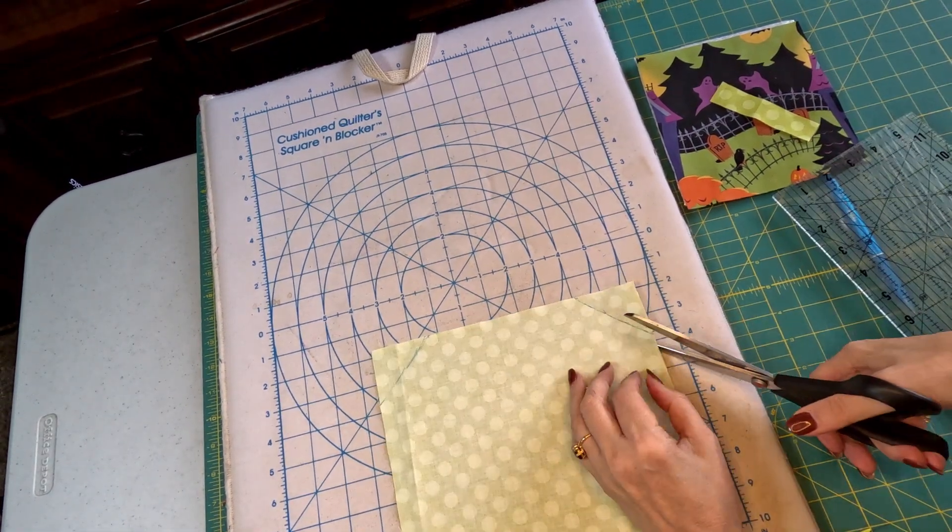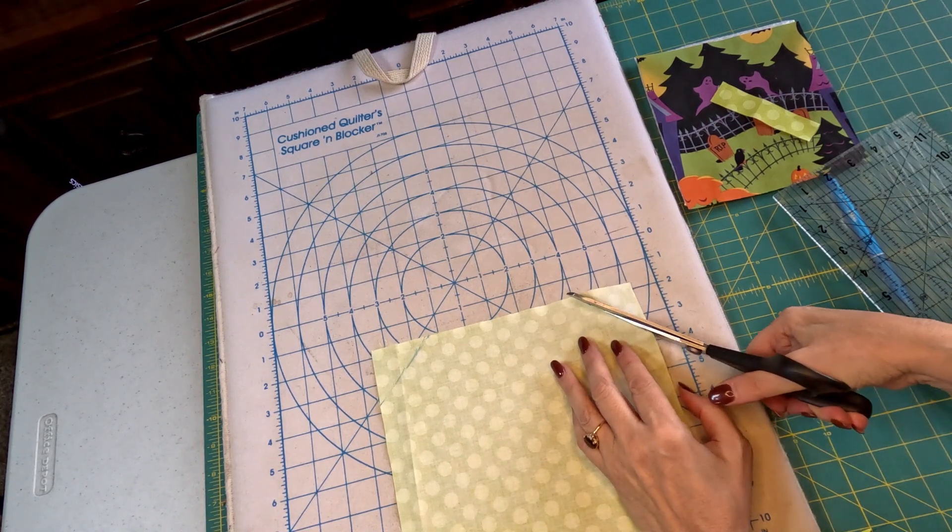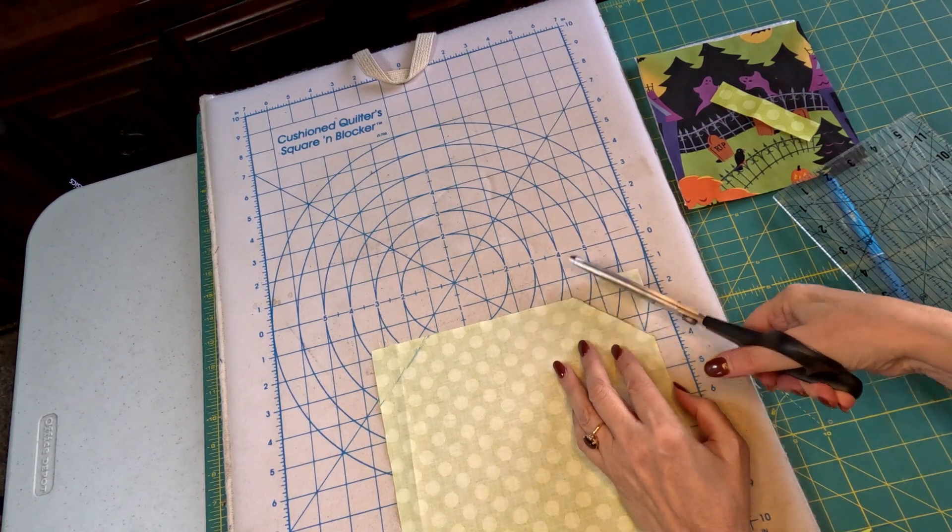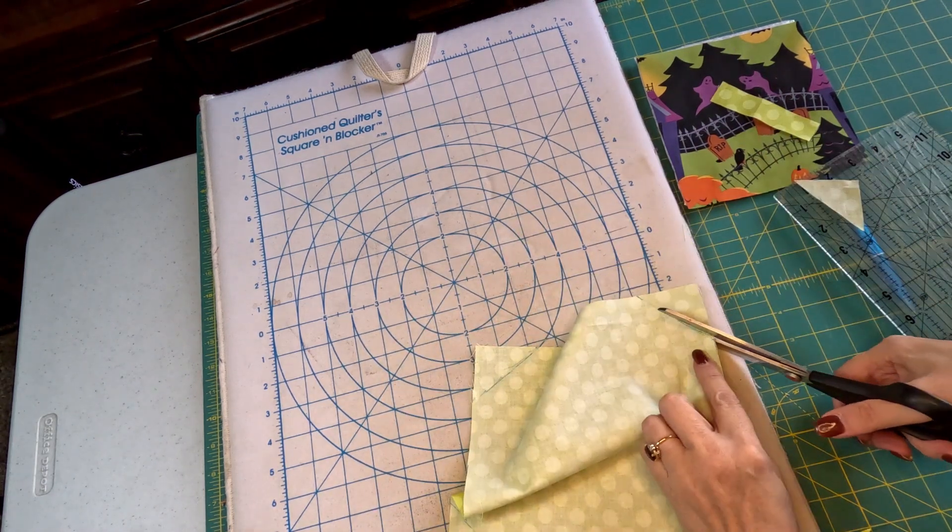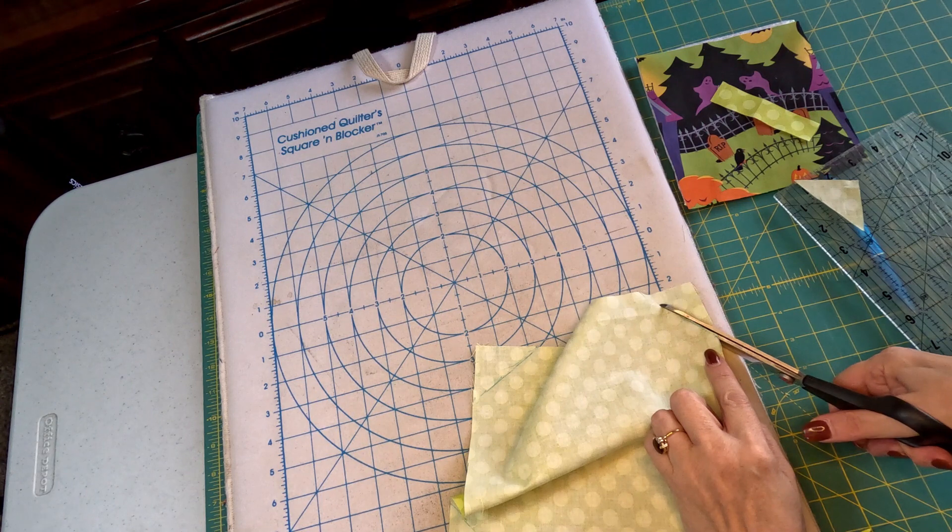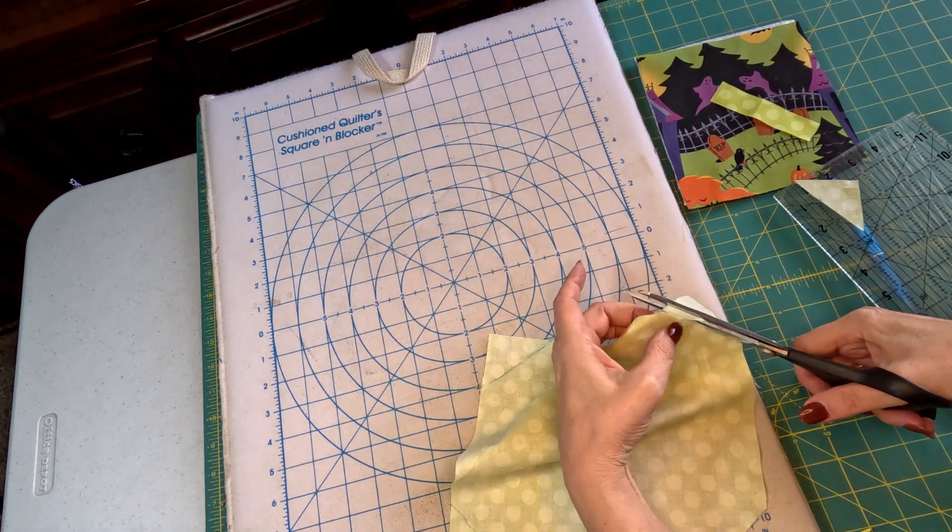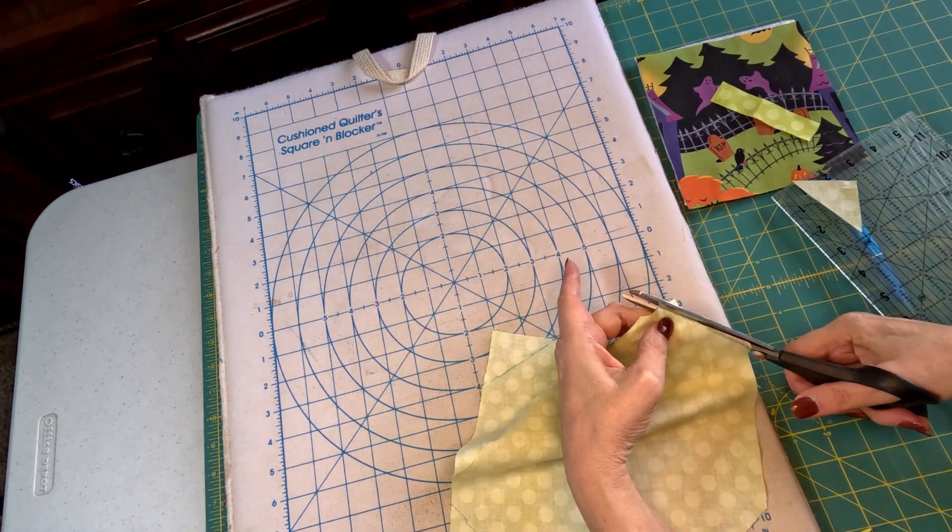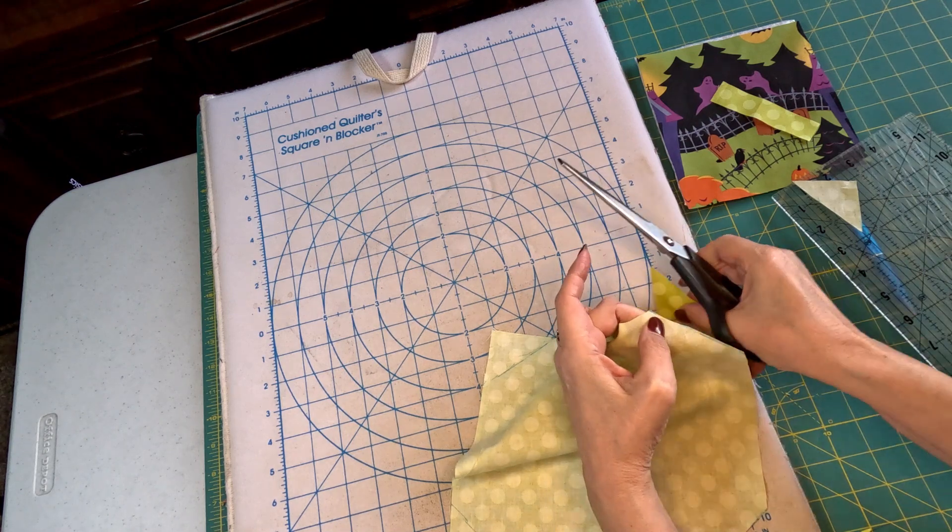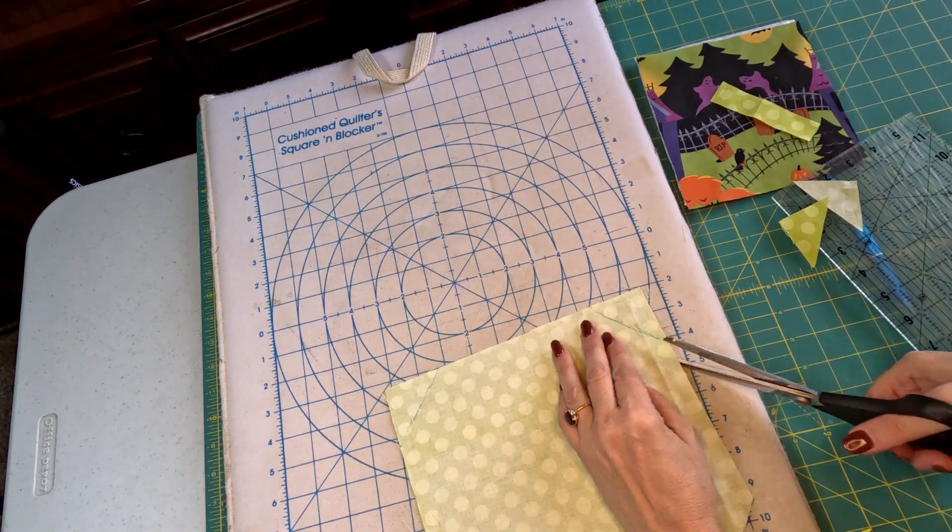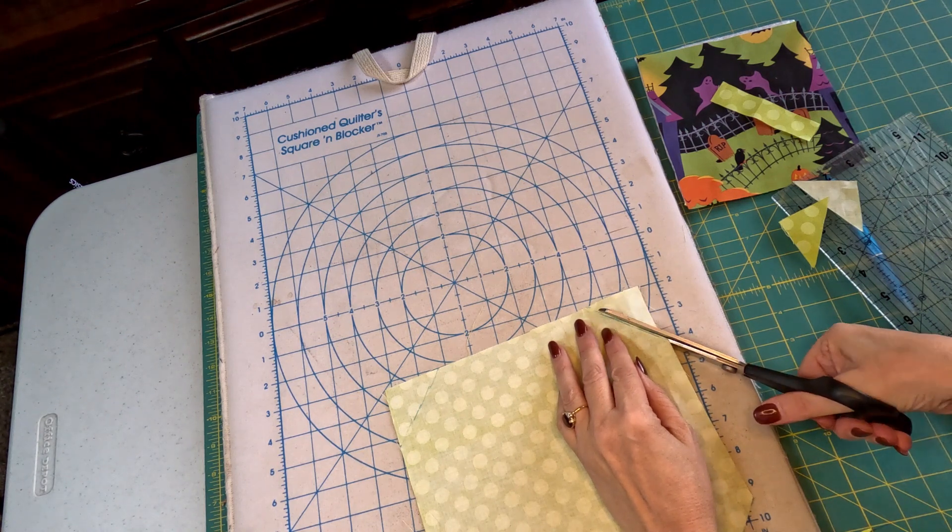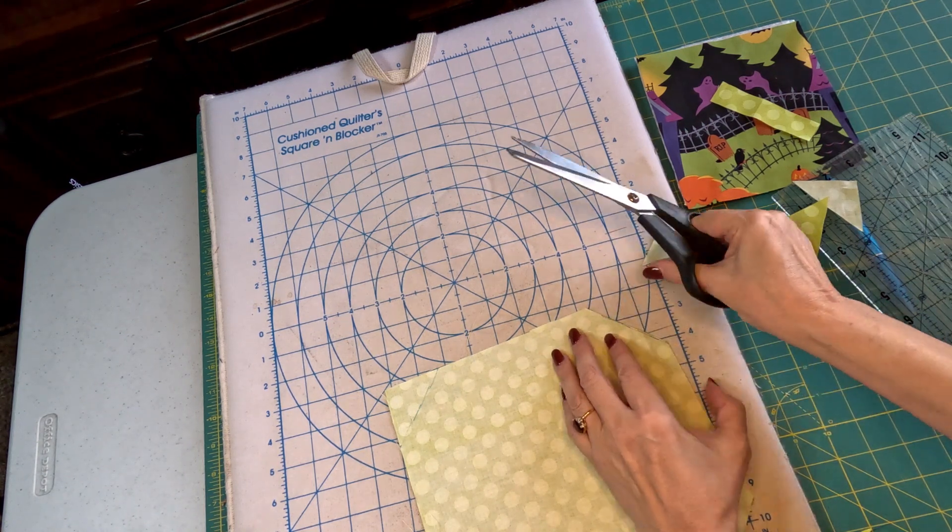Now take your scissors or your blade and cut off those corners. The reason I said not a fraction deeper is if you cut off too much, you're gonna have to cut down your picture because it's not gonna fit in here.